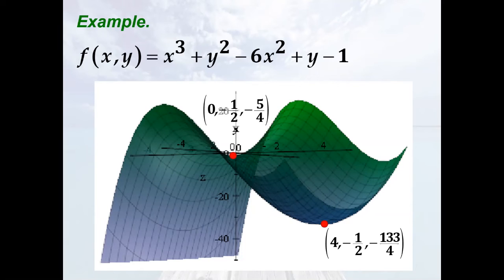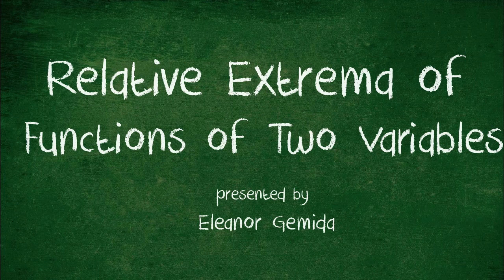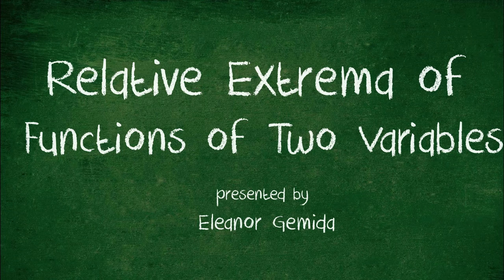This figure illustrates the graph of the function as well as the saddle point and the relative minimum point. To summarize, I have discussed relative extrema of functions of two variables. There are two important points where we used partial derivatives: number one is in finding the critical points, and number two is in the second derivative test in order to determine the nature of the function at the critical points. For more examples, please refer to the set of exercises provided to you. This is Ma'am Elia — have a good day.